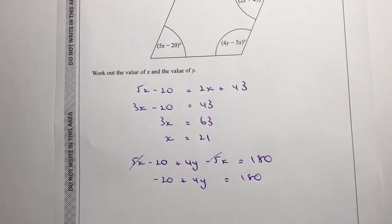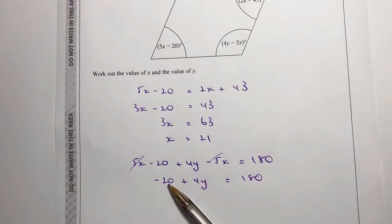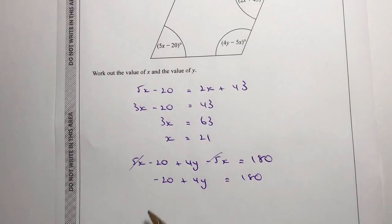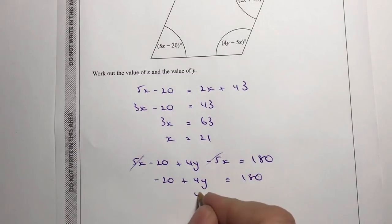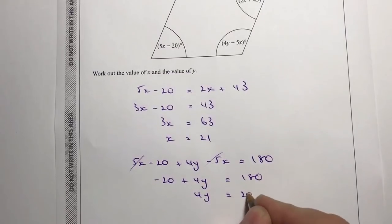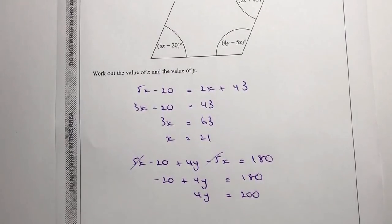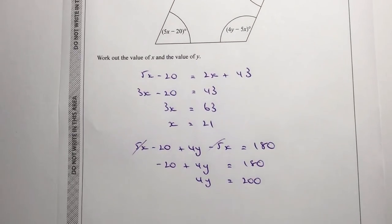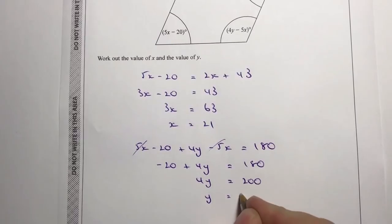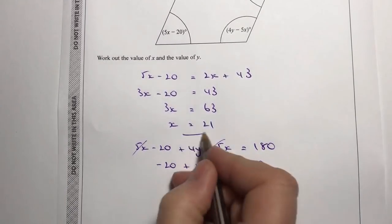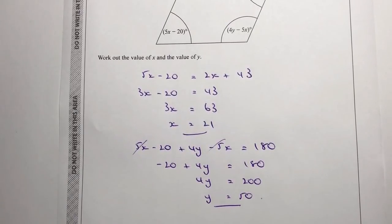I need to get my y's on one side and numbers on the other, so I add 20 to both sides, giving 4y equals 200. Dividing through by 4, y equals 50. So in answer to the question, x equals 21 and y equals 50.